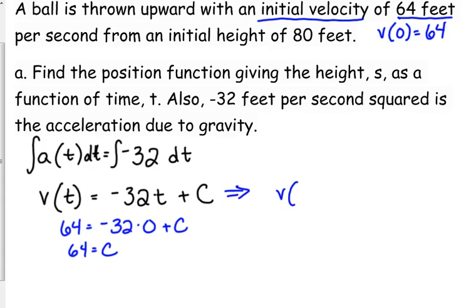So I'm going to plug that in. My velocity function is negative 32T plus 64. Well, I'm not there yet. Right now I'm just at velocity. But what we really want is the position function. So we're going to have to integrate again or anti-differentiate again.